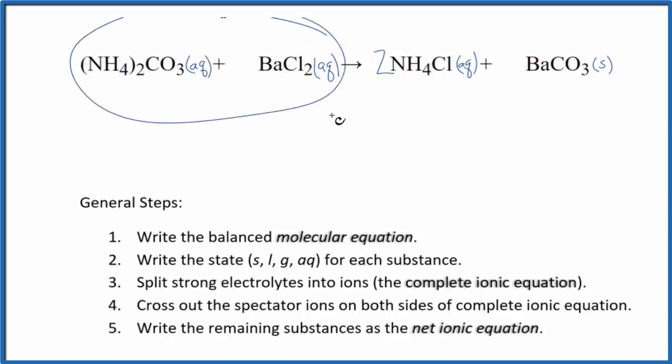When these two substances react, we end up with this solid. This is a precipitation reaction. It'll fall to the bottom of the test tube. So we have the states. Now we can split the strong electrolytes into their ions. That'll give us the complete ionic equation.